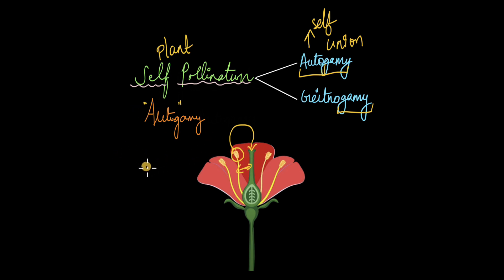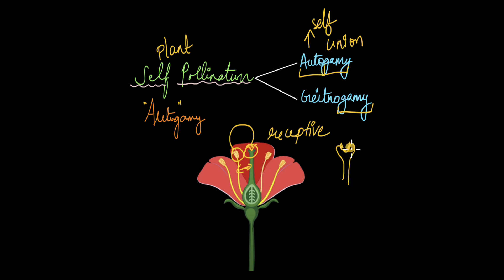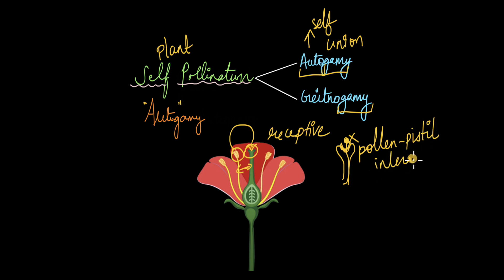Another factor that regulates autogamy is the timing of pollen grain release from the anther — it must coincide with when the stigma is receptive. When the stigma is not receptive, even if a compatible pollen grain lands on it, the pollen grain will not germinate; the stigma will not allow it. This is known as pollen-pistil interaction, which we'll discuss further in a different video. These two factors together make pure autogamy quite rare.